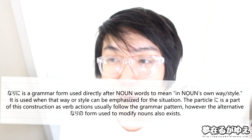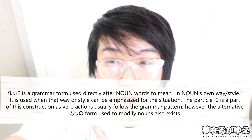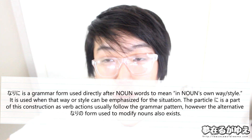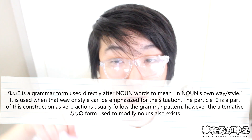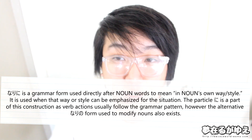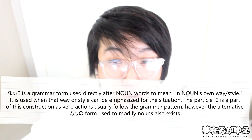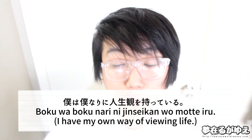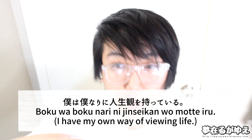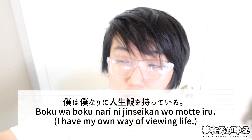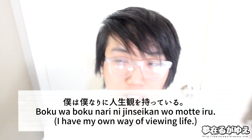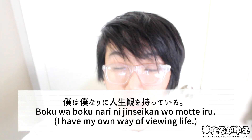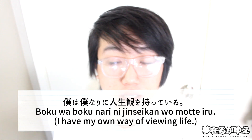We'll provide one example of narino in the example sentences, which we'll cover now. So, narini as 'one's own way or style.' Our first example sentence for this grammar pattern is: boku wa boku narini jinseikan wo motte iru. This line is going to translate to basically: I have my own way of viewing life. Let's break down the sentence bit by bit.